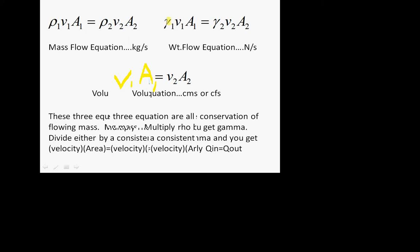If you multiply by the unit weight gamma — for water that's 62.4 pounds per cubic foot or 9800 newtons per cubic meter — you get the weight flow equation. These three equations are all forms of conservation of mass. If you take the continuity equation and multiply rho by g, you get gamma.